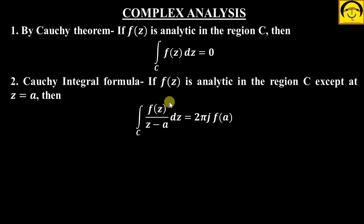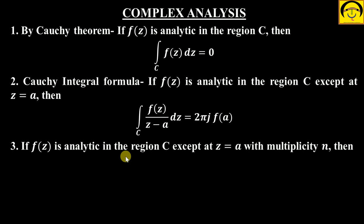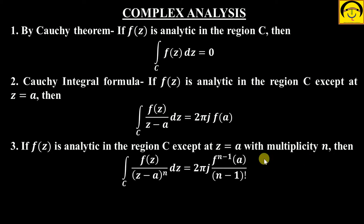If f(z) is analytic in the region C except at z equal to a with multiplicity n, then the integral of f(z) over z minus a whole raised to the power n dz equals 2πi times the (n−1)th derivative of f at z equal to a, divided by (n−1) factorial.